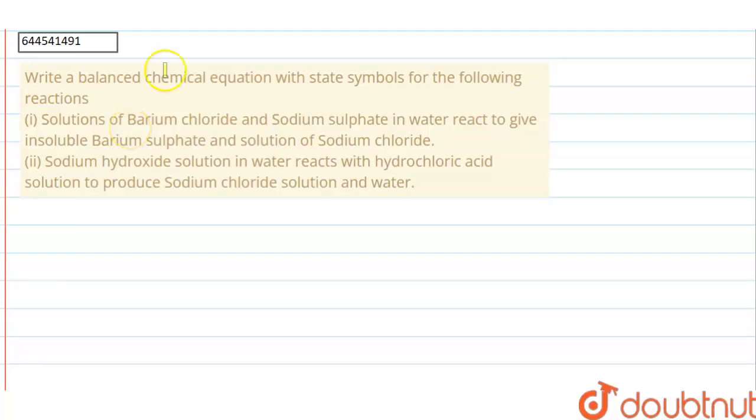The question: Write a balanced chemical equation with state symbols for the following reactions. Two reactions are given in the question, so going to solve this.